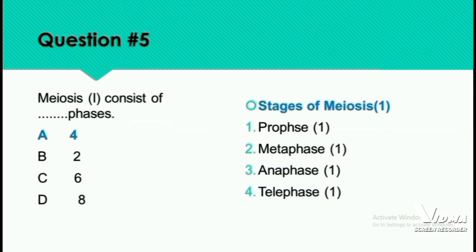Question 5: Meiosis 1 consists of how many phases? In Meiosis 1, we have four stages: Prophase 1, Metaphase 1, Anaphase 1, and Telophase 1. Similarly, in Meiosis 2, the stages are Prophase 2, Metaphase 2, Anaphase 2, and Telophase 2.